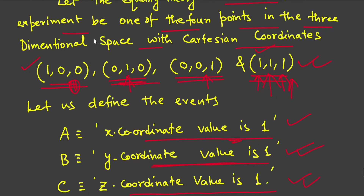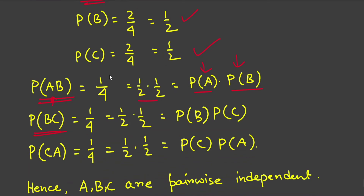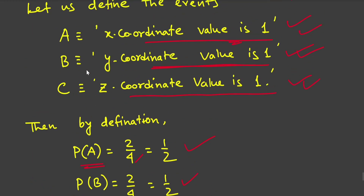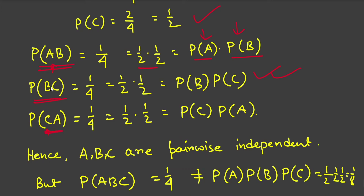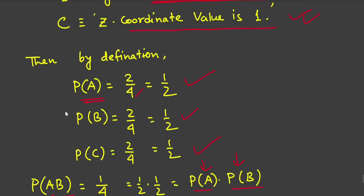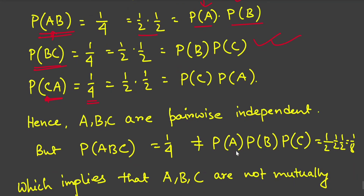P(BC) means y-coordinate is 1 AND z-coordinate is 1, which again occurs only at point (1,1,1), giving P(BC) = 1/4 = (1/2)·(1/2) = P(B)·P(C). Similarly, P(CA) means z-coordinate is 1 AND x-coordinate is 1, which also occurs only at (1,1,1), giving P(CA) = 1/4 = P(C)·P(A). Therefore A, B, and C are pairwise independent.